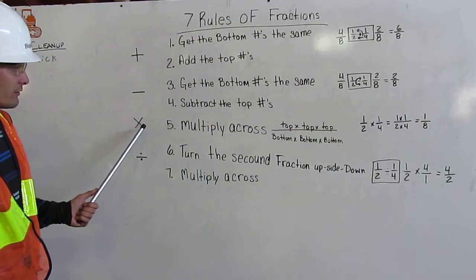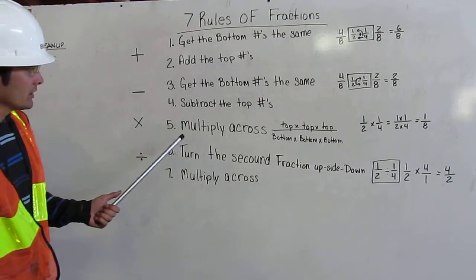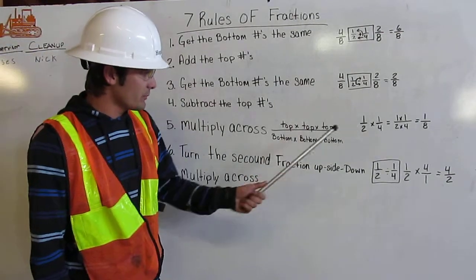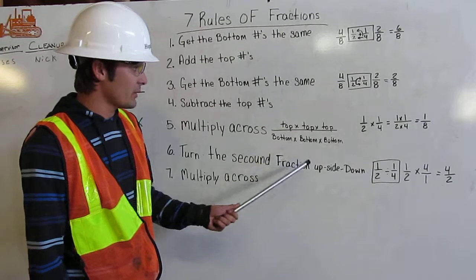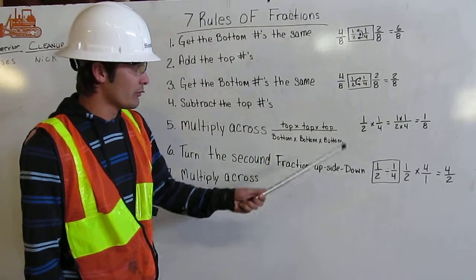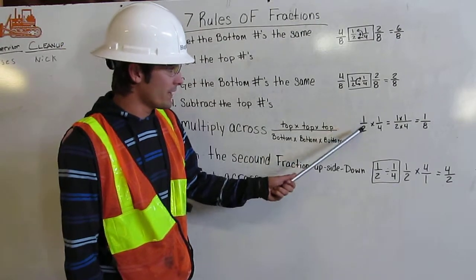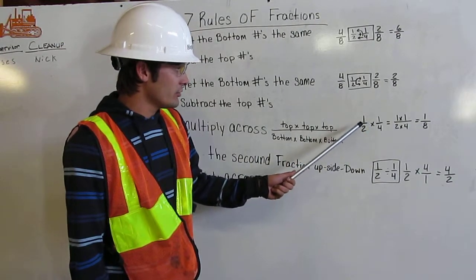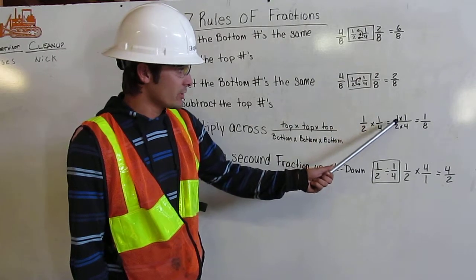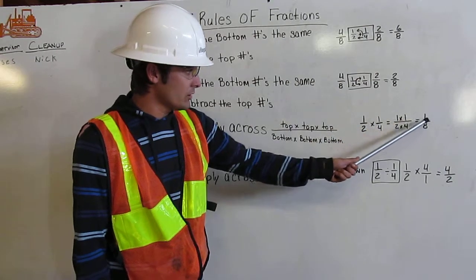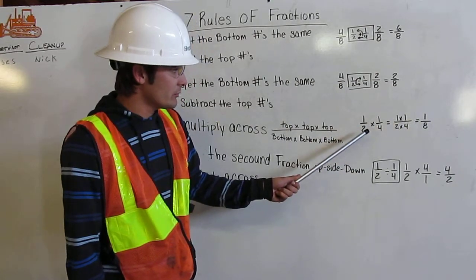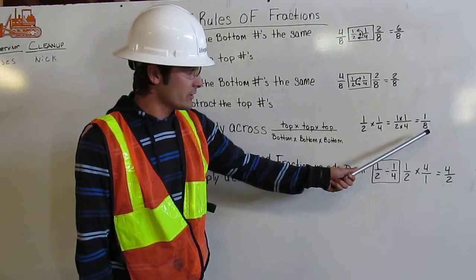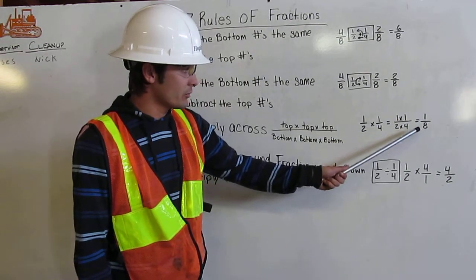Next I'm going to multiply fractions. I'm going to multiply across — the top times the top times the top, and the bottom times the bottom times the bottom. Over here I have one-half times one-quarter. So all I need to do is multiply my top two numbers together. 1 times 1 equals 1. I'm going to multiply my bottom two numbers together. That's 2 times 4. 2 times 4 equals 8, and that gives me 1 over 8.